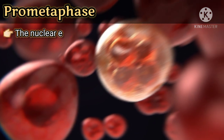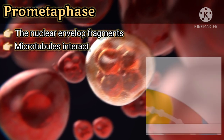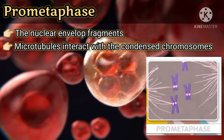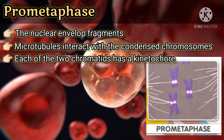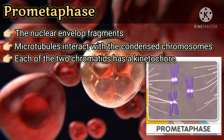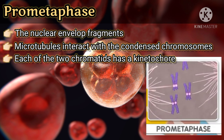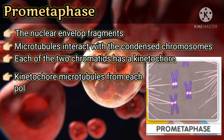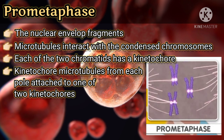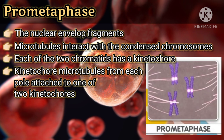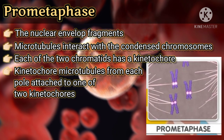In prometaphase, the nuclear envelope fragments. Microtubules interact with the condensed chromosomes. Each sister chromatid of a chromosome has a kinetochore, which is a specialized protein structure located at the centromere. Kinetochore microtubules from each pole attach to one of the two kinetochores. Non-kinetochore microtubules interact with those from opposite ends of the spindle.